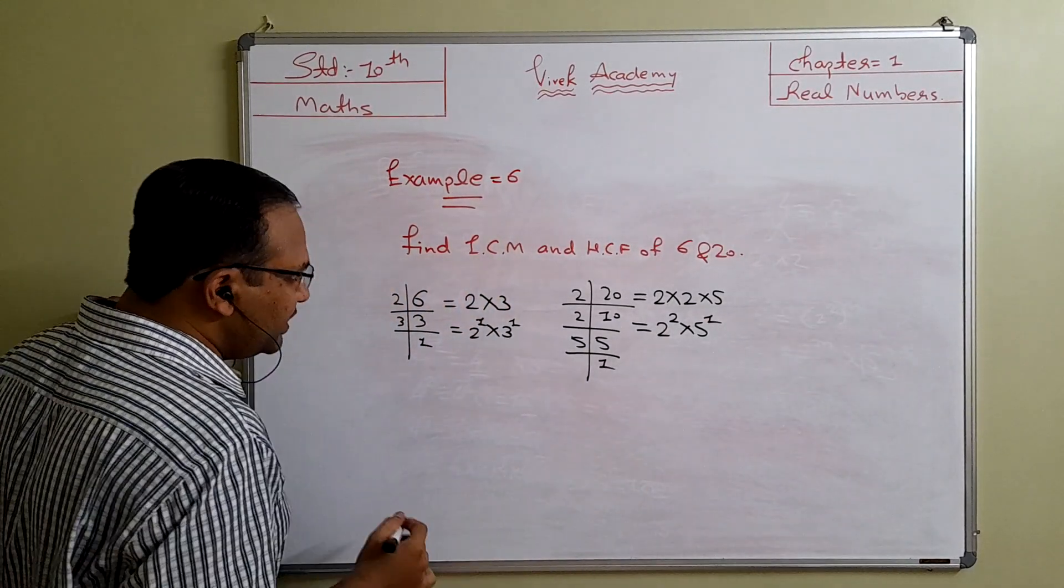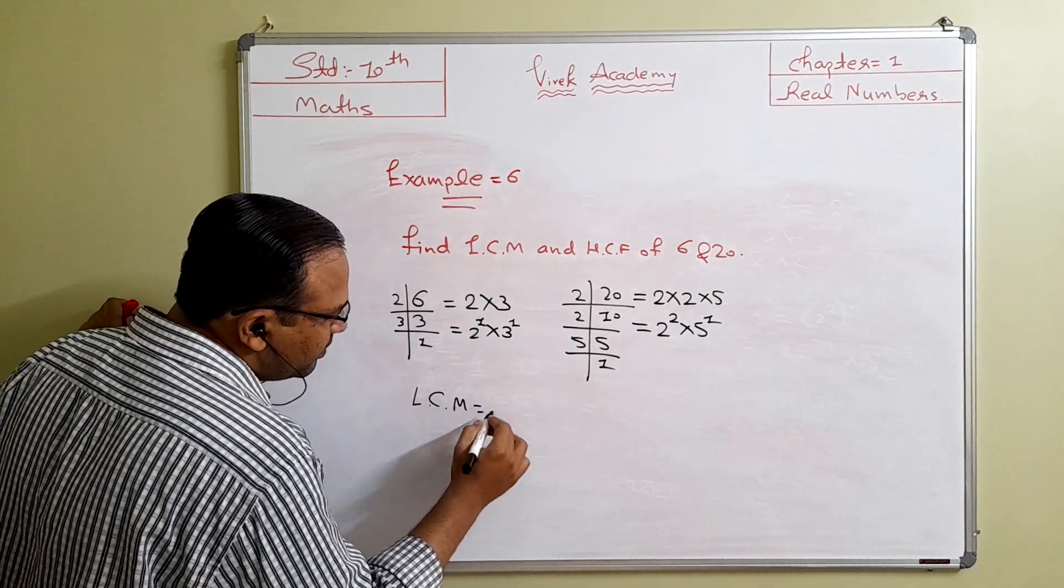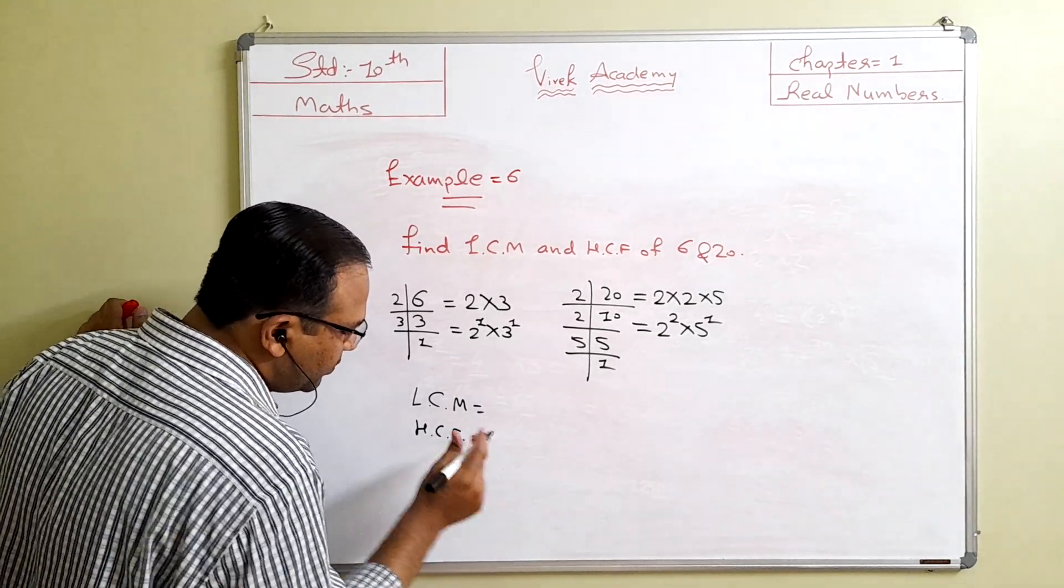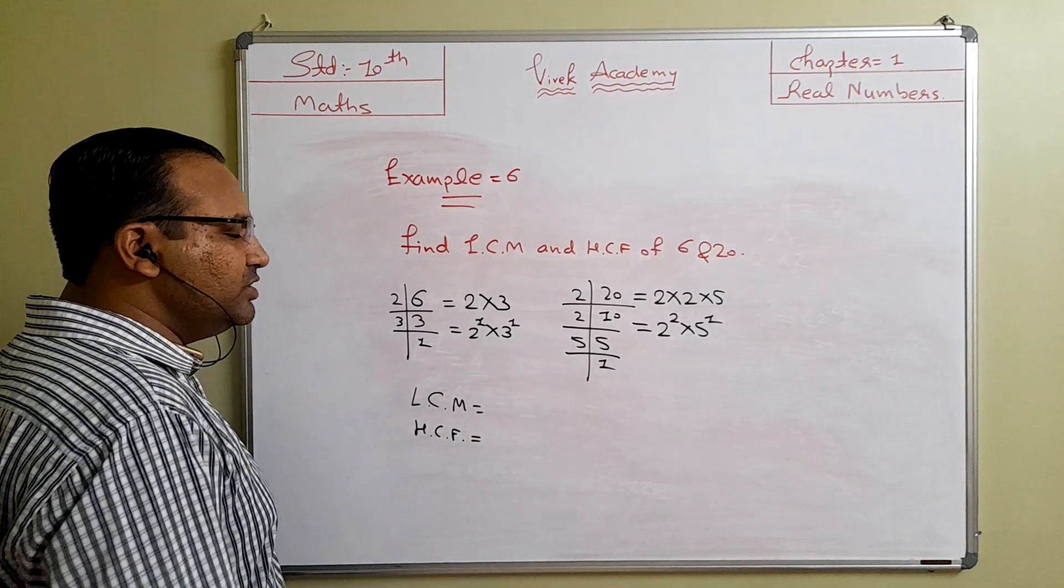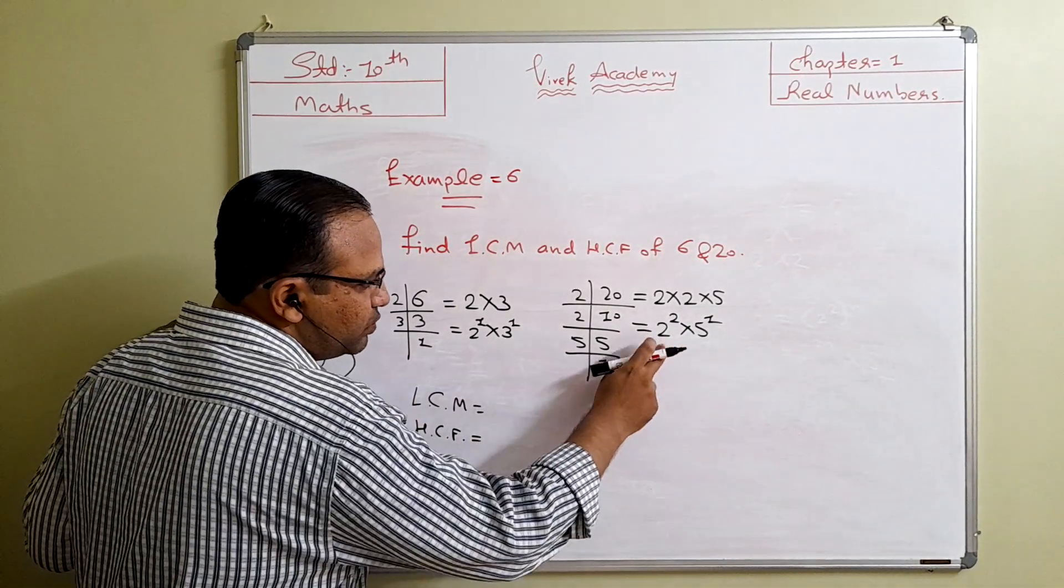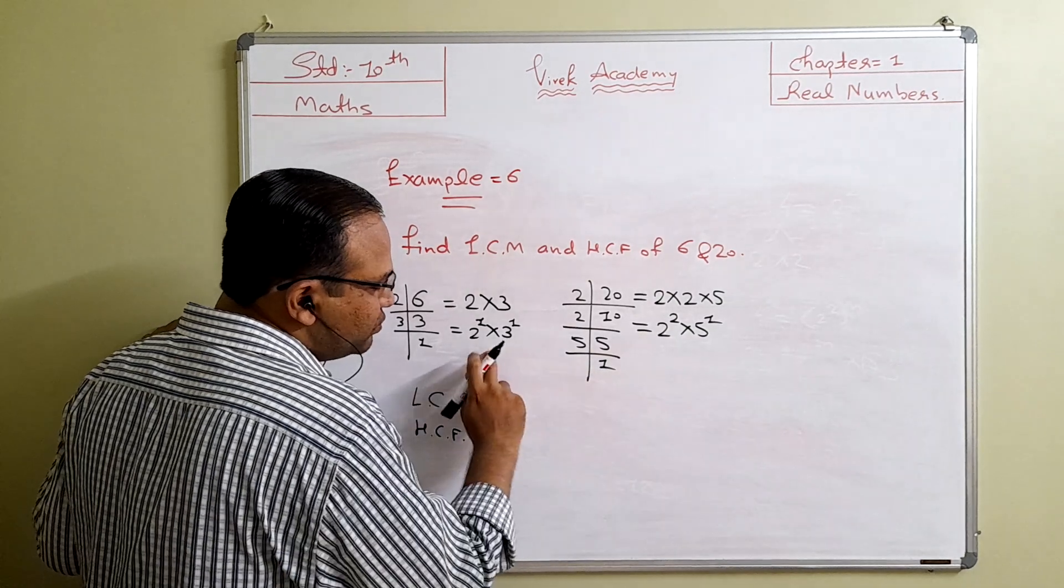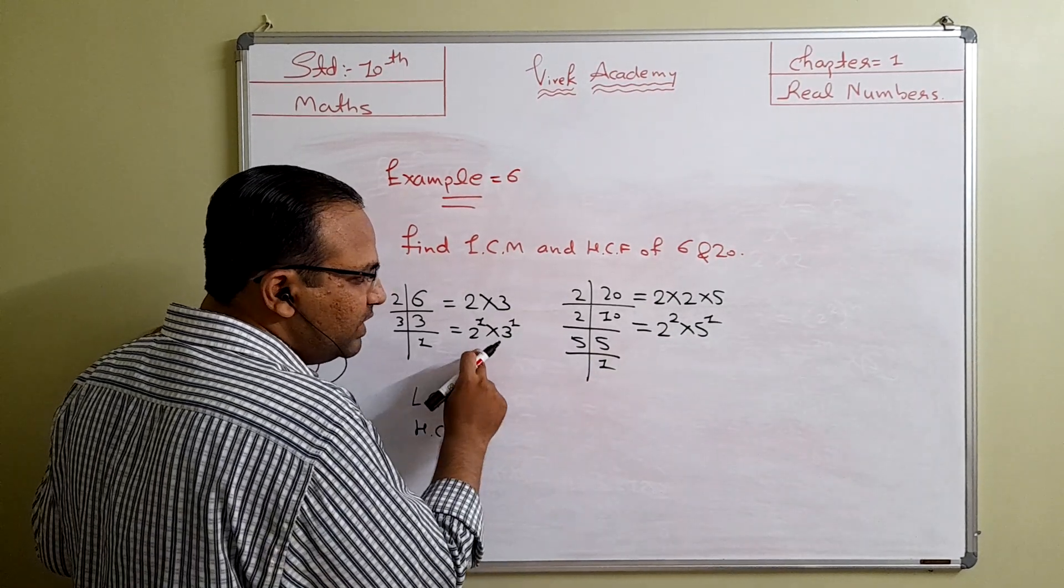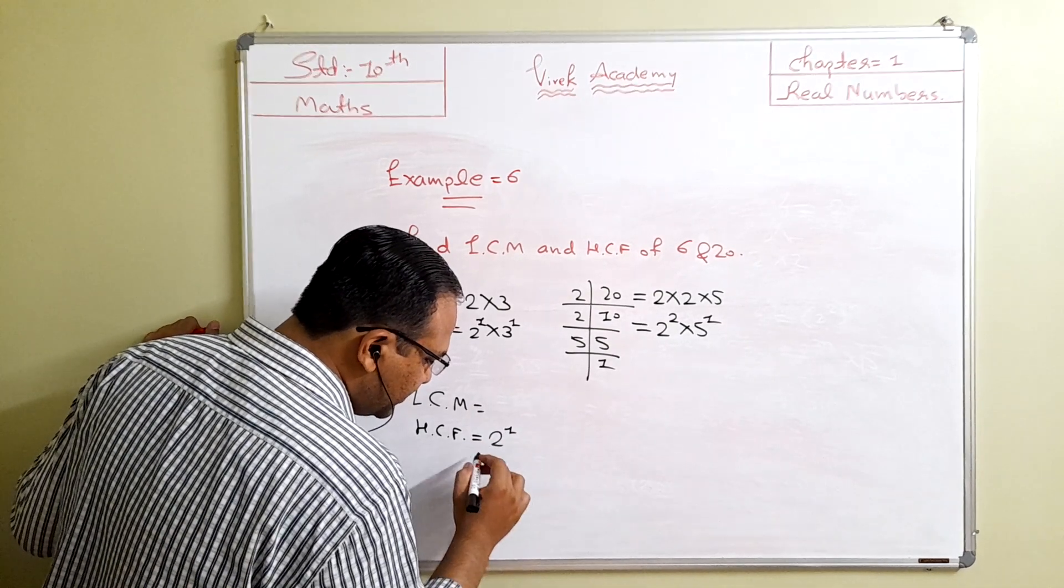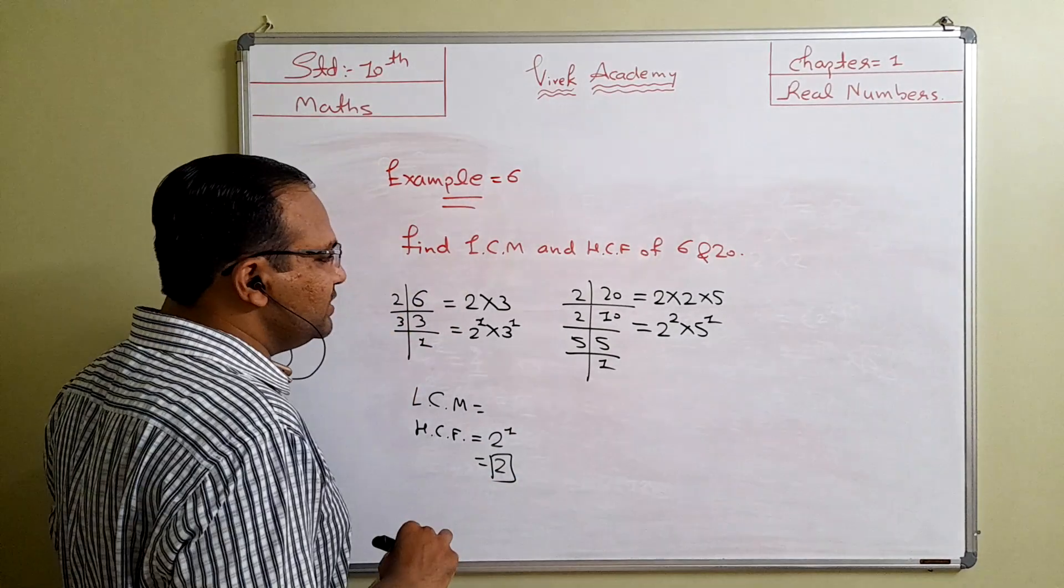Now we have to find the LCM (least common multiple) and HCF (highest common factor). The common factor must be the number which is common. Here 2 is common, but 3 is not common and 5 is also not common. Only 2 is common with the minimum exponent. So 2 raised to 1 is the answer, which equals 2.